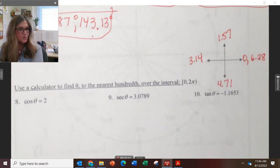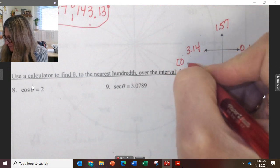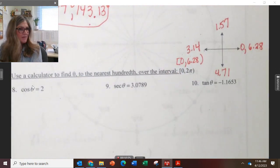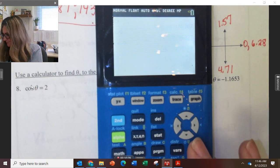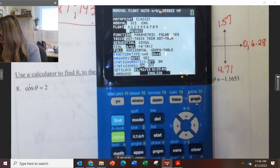So we've got to kind of switch the way we're thinking. Every answer we come up with has to be between 0 and 6.28. What do I need to change my calculator to? Go to my mode, make sure that I'm in radians.